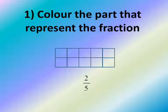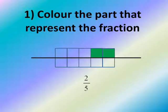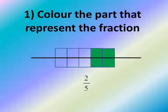2 over 5: color 2 from 5. But we don't have only 5 parts — we have more than 5 parts. We have 5 squares up and 5 squares down. Then color 2 parts up and 2 parts down. Color 2 squares up and 2 squares down.